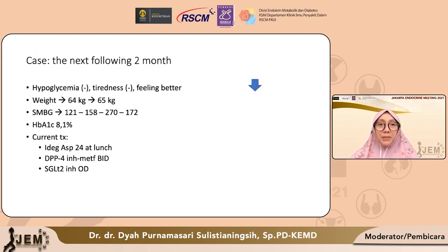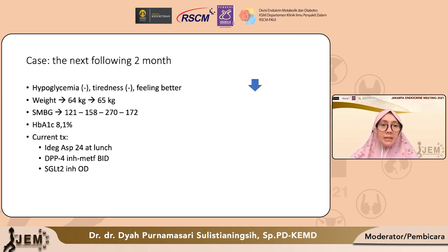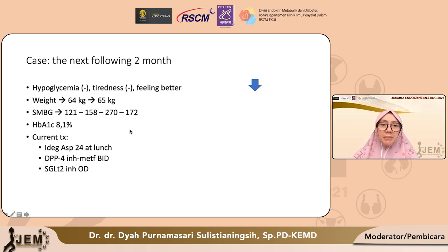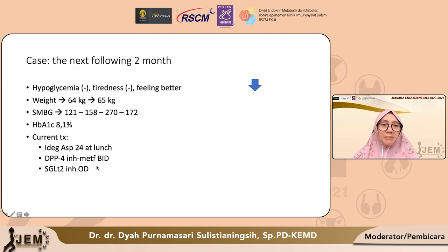Pada kedatangan 2 minggu setelahnya, pasien mengaku tidak pernah hipoglikemi, tidak ada rasa mudah lelah dan merasa kondisinya lebih baik, berat badannya naik 1 kg. Dari hasil SMBG: gula darah puasa 121, pre-lunch 158, post-lunch masih cukup tinggi karena memang makanannya paling banyak di siang hari, dan bedtime 172. HbA1c sudah turun cukup banyak, dari 9,5 menjadi 8,1. Saat ini pasien mendapatkan terapi IDeg-Aspart 24 unit saat makan siang, dan masih mendapatkan OAD.